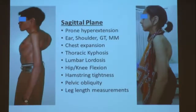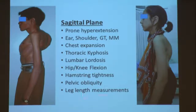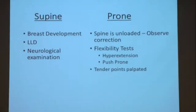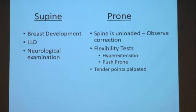Check whether the curve is getting corrected on bending and mention any associated conditions. Note if there is muscle spasm — forward bending can sometimes be extremely painful. In the lateral or side profile, comment on the shoulder, thoracic curvature, neck curvature, lumbar spine, hamstring tightness, pelvic obliquity, and limb length measurements. In the prone position, the spine is unloaded — you see the difference compared to standing. It may get corrected and shoulders may become equal, which is valuable information.